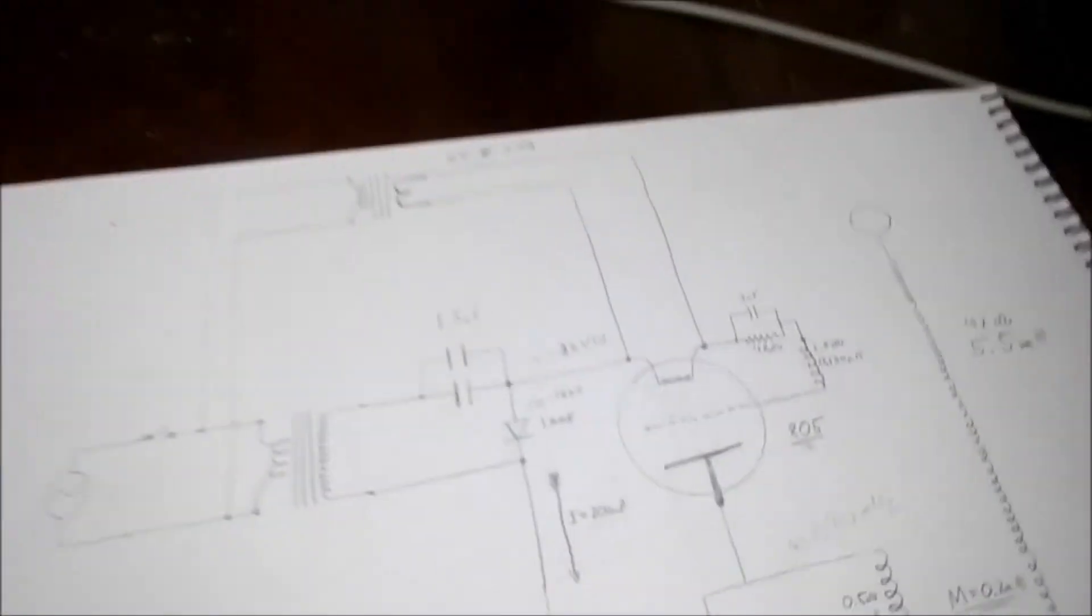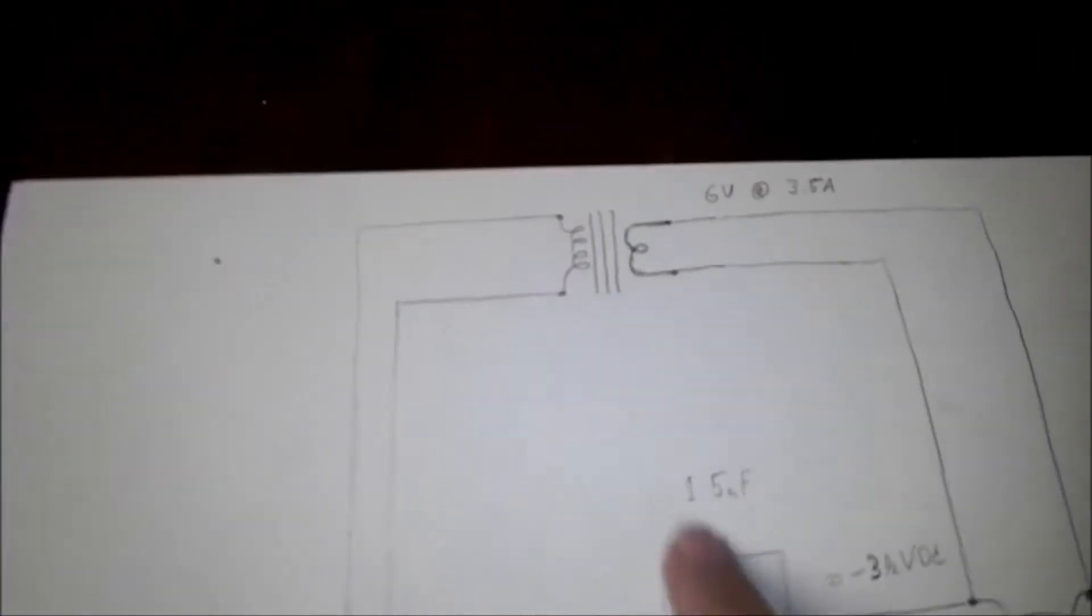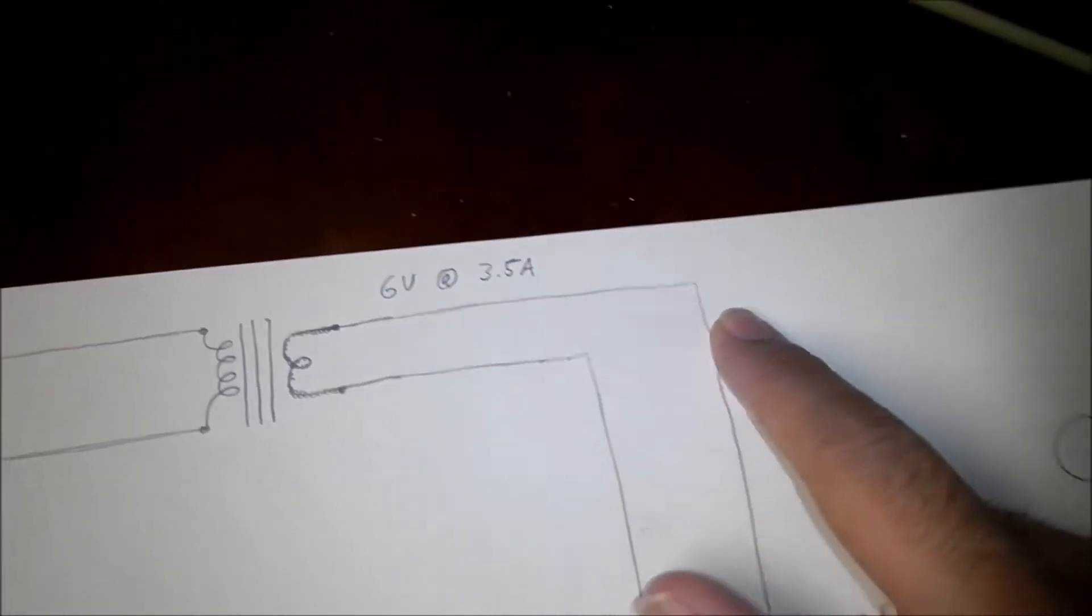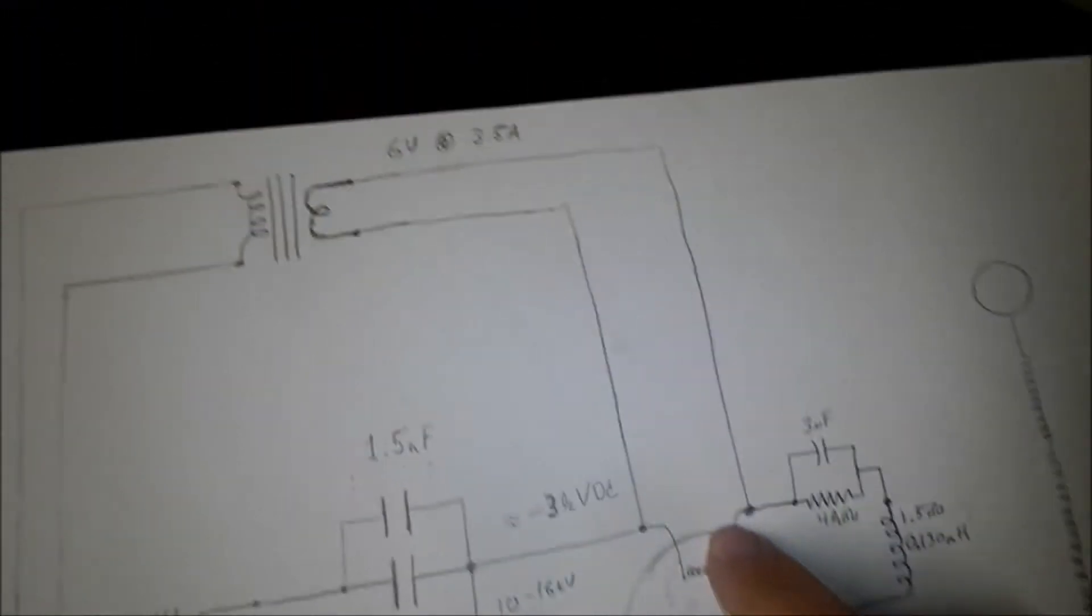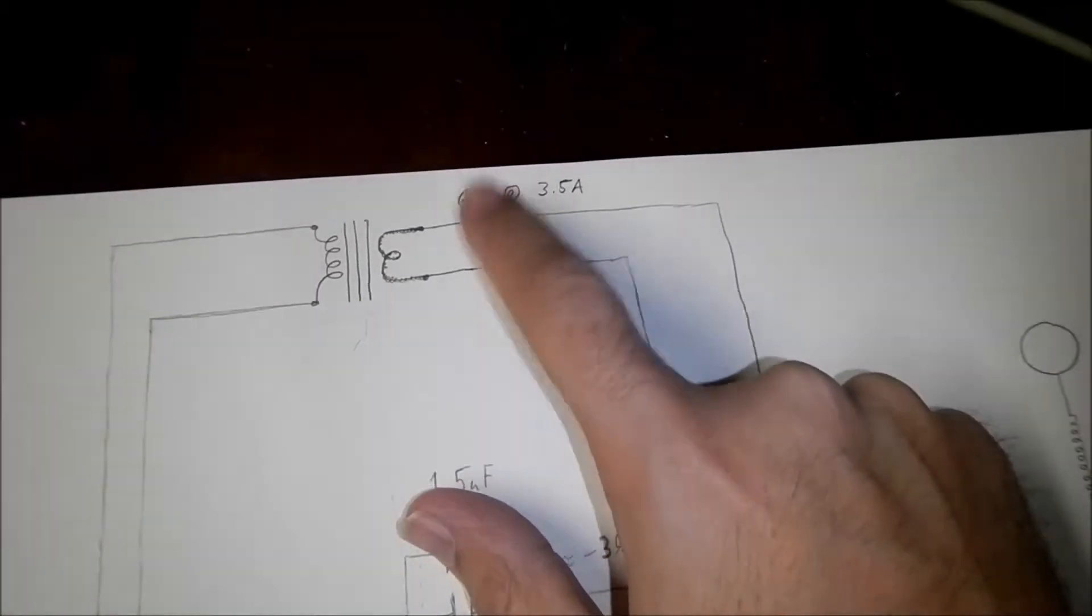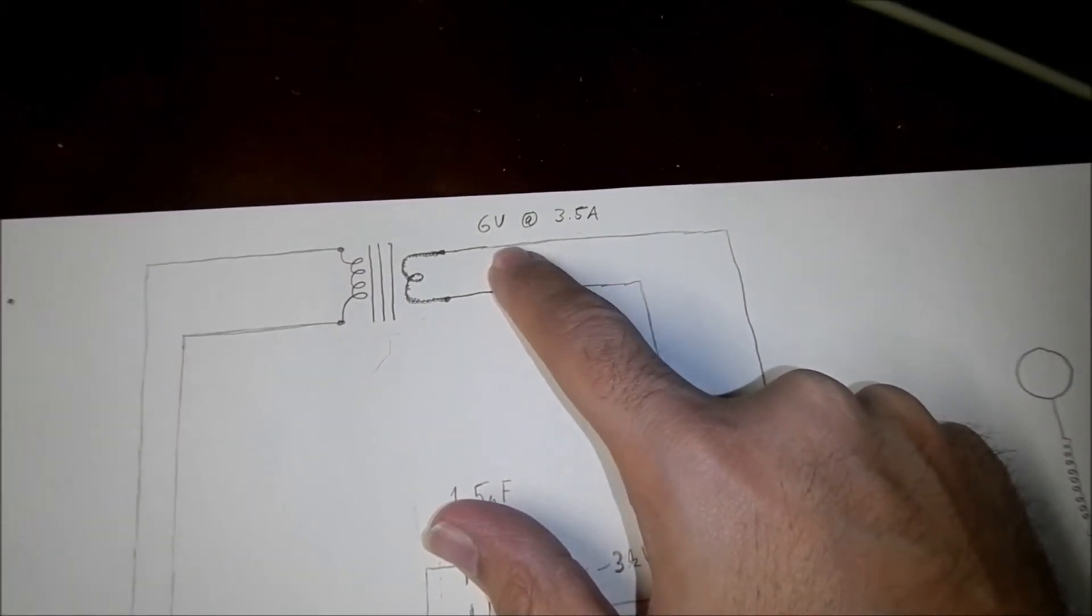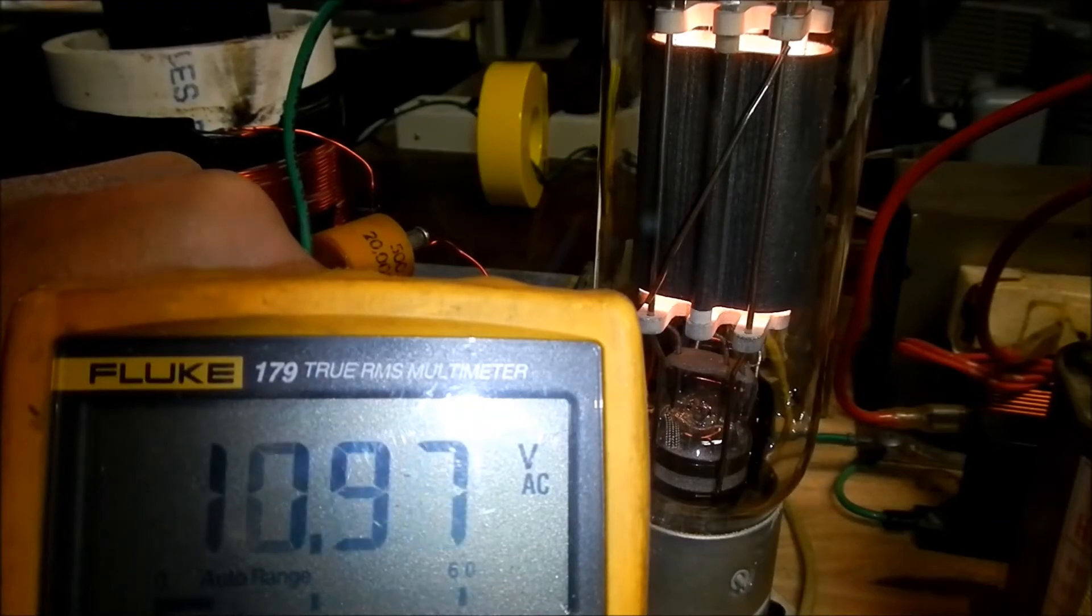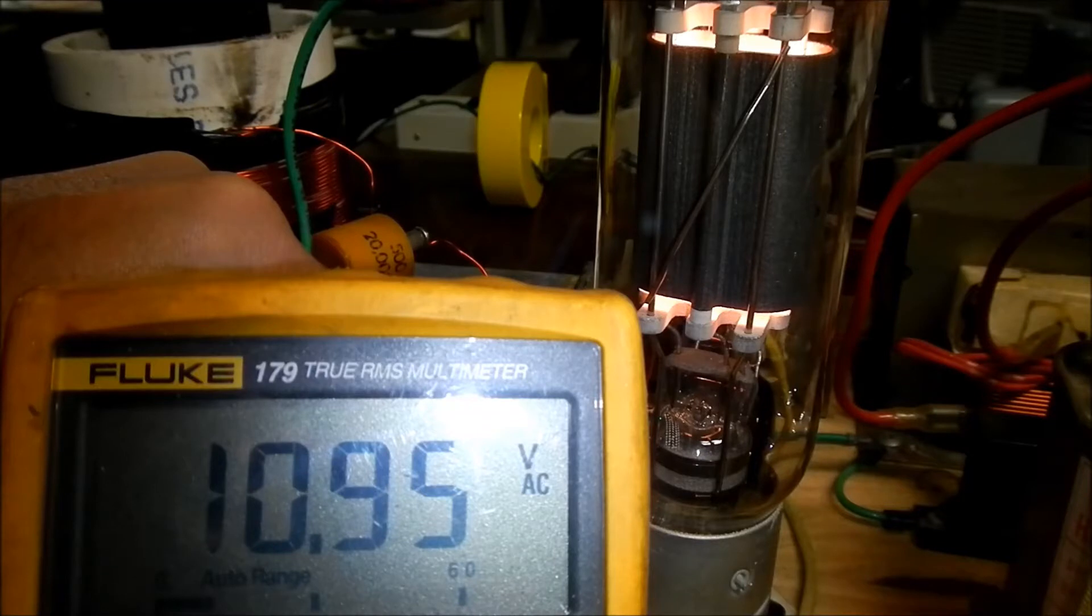One of the comments was I mentioned a 6 volt filament potential and this isn't accurate. In the spec sheet, it's listed as 10 volts and actually I'm going to measure it right now just to verify. And I'm measuring 10.95 volts AC across the filament of the vacuum tube.